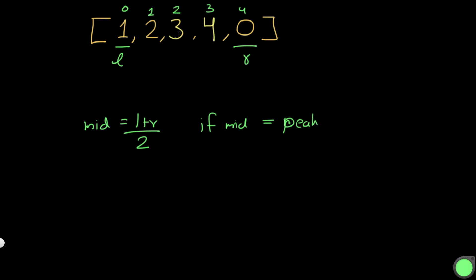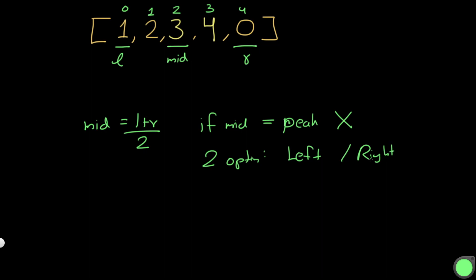Now let's use the array: 1, 2, 3, 4, 0. We can see that 4 is the peak, but how do we get there? Mid is at index 2, which is 3. We check if 3 is a peak: 3 is greater than 2, but 3 is less than 4 — so mid is not a peak. We now have two options: move left or move right. The condition is based on which neighbor is greater.